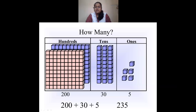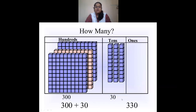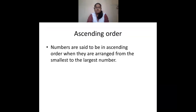Another example: in ones place we have 5 individual blocks, in tens place 3 blocks of tens, and in hundreds place 2 towers of 100 blocks each. So two hundreds, three tens, and five ones is 200 + 30 + 5 = 235. Another example: ones place has nothing (zero), tens place has 3 tens, and hundreds place has 3 blocks of 100 each — so 300 + 30 = 330.